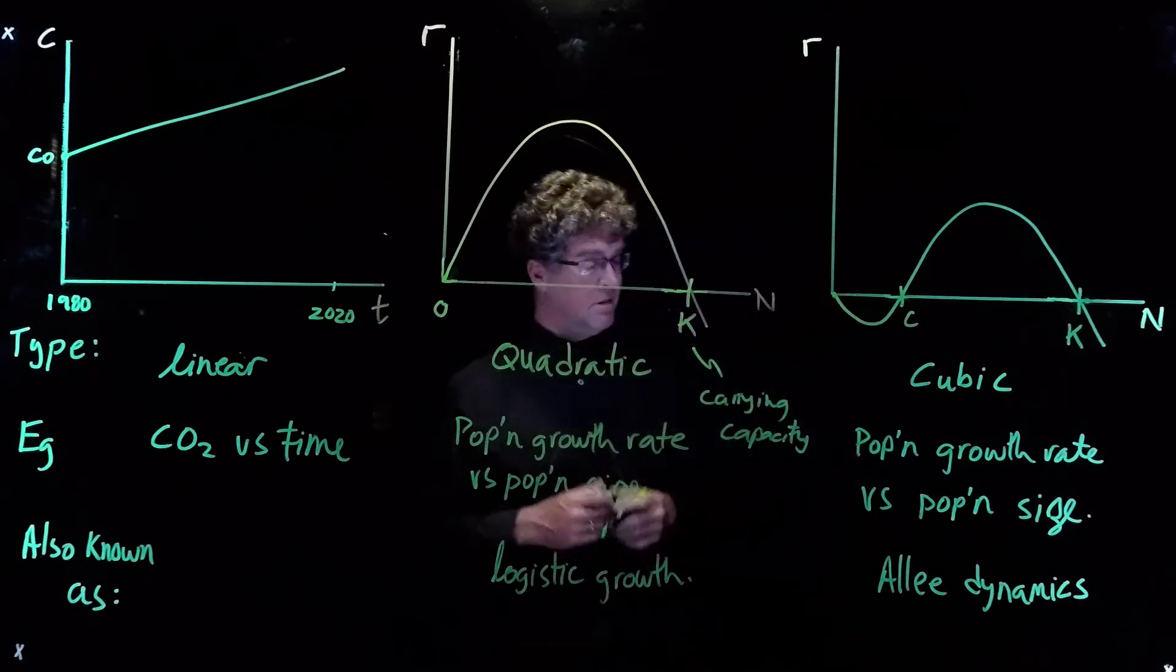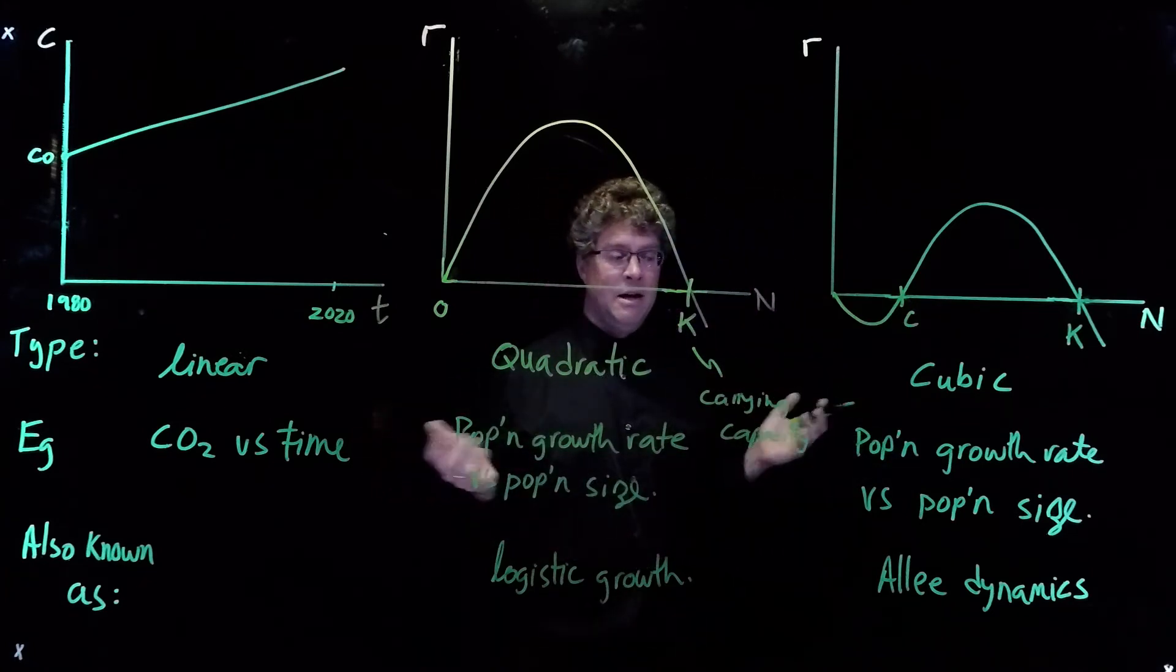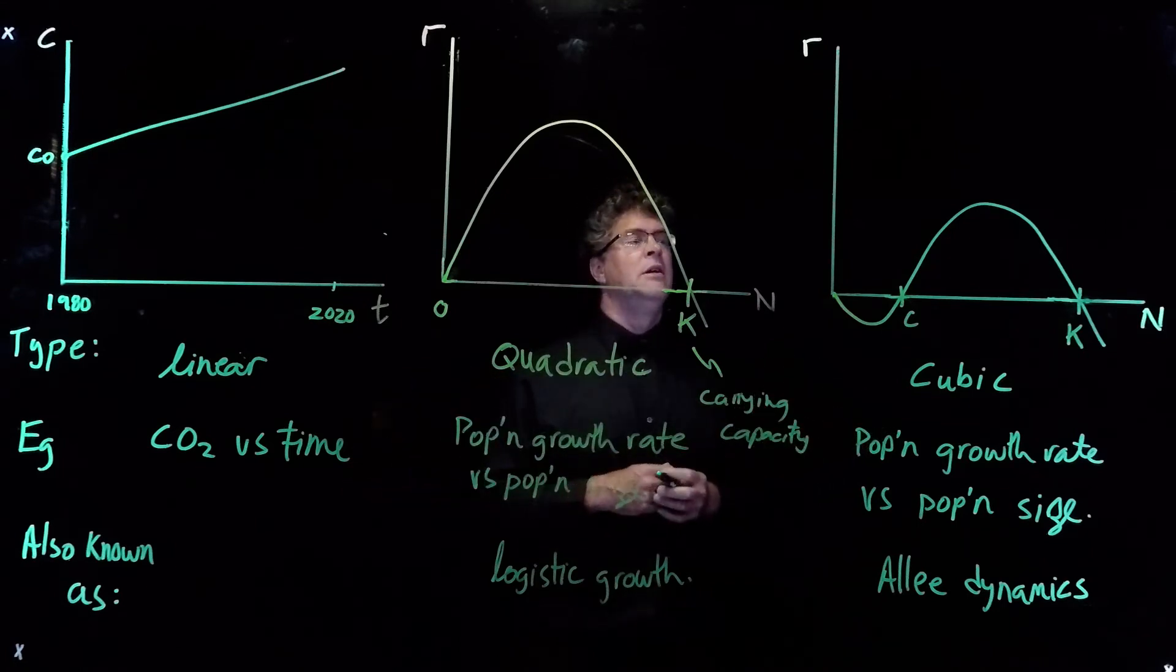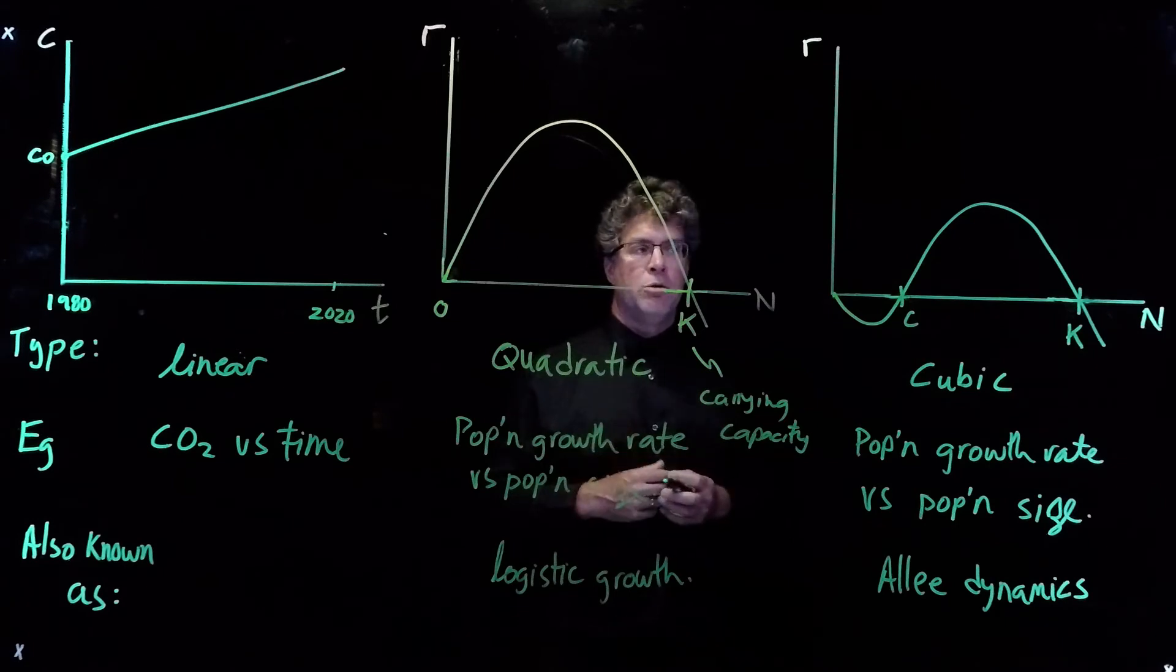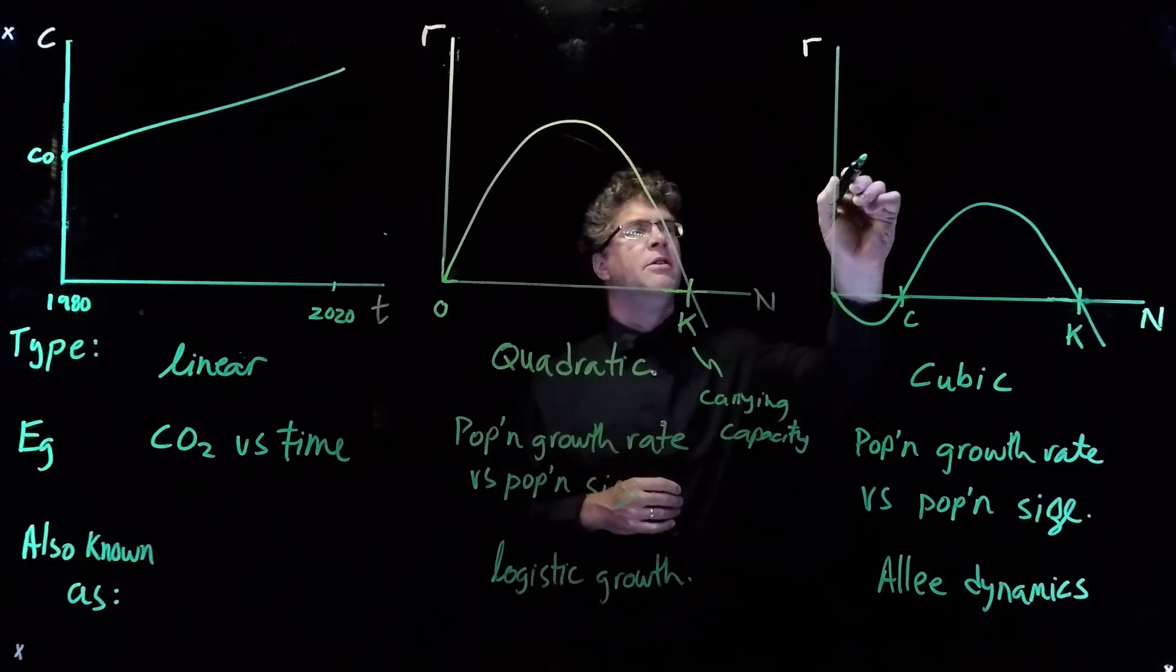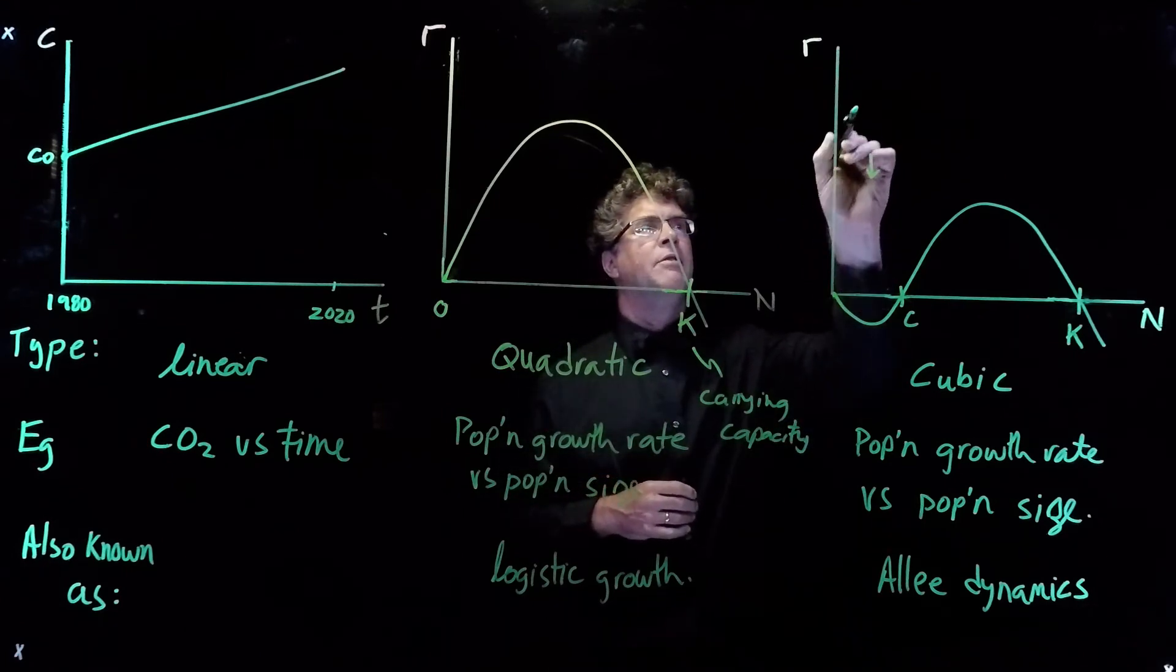This has been referred to as Allee dynamics in honor of the scientist called Allee, who discovered that populations sometimes have negative growth rates when the population sizes are small. So this is what's shown here, in this region here, we have a negative growth rate.